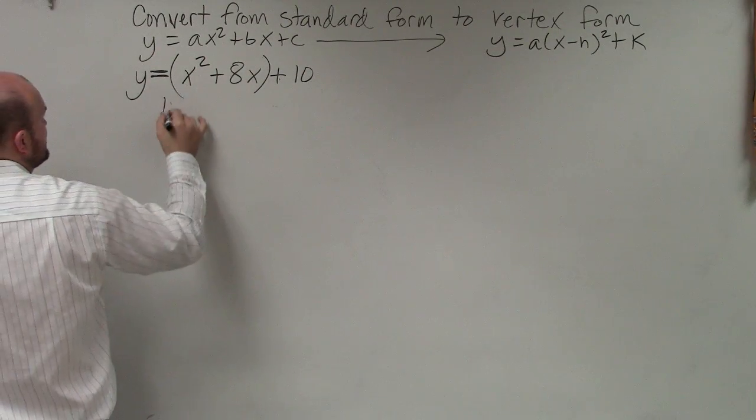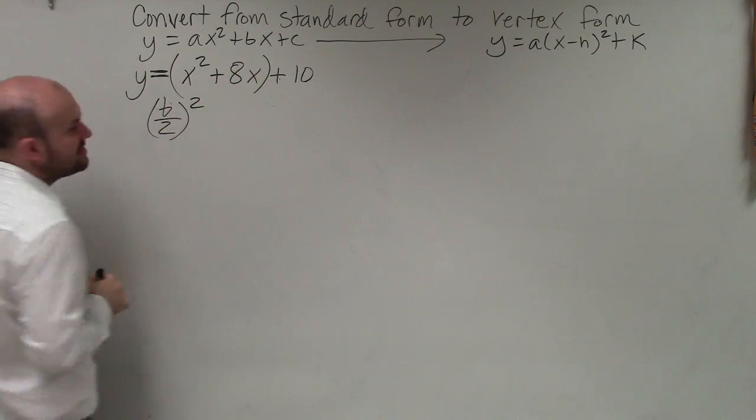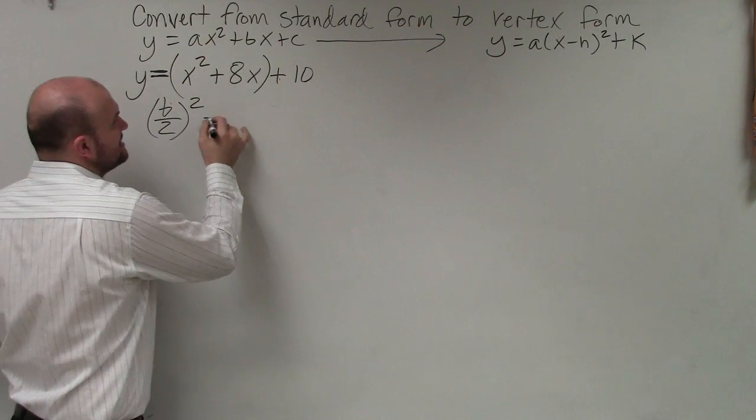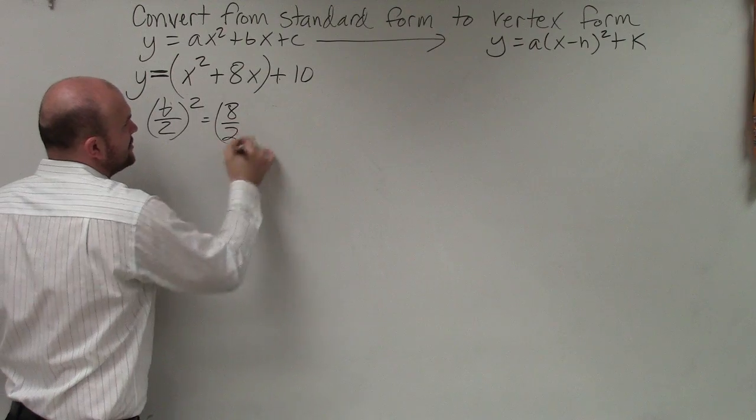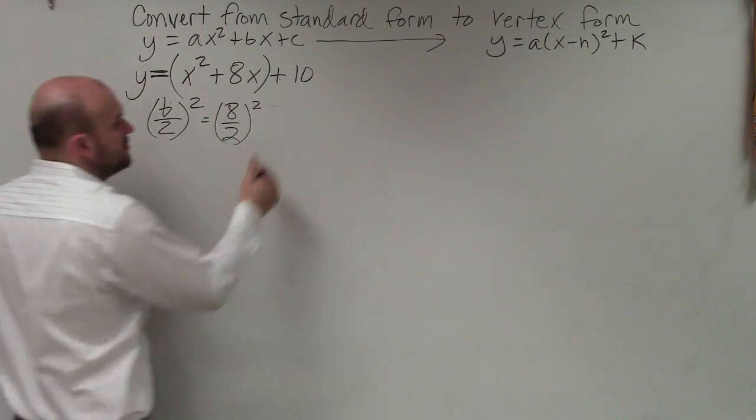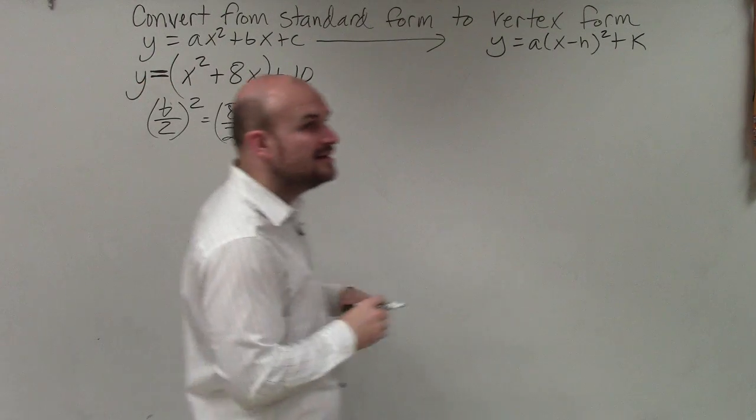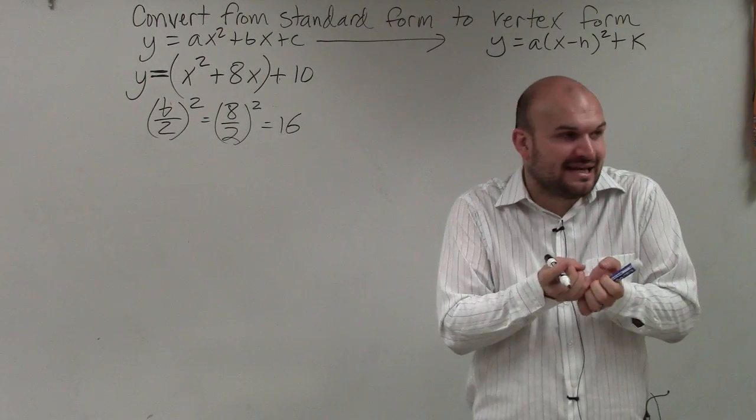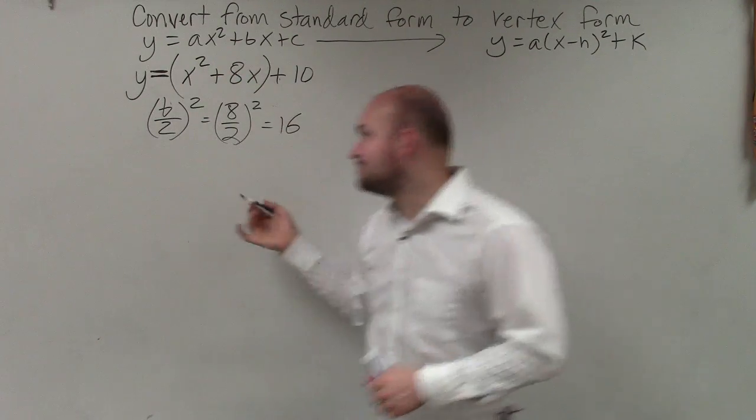Step number two is we're going to take b divided by 2 and square it. In this case, I'm going to have 8 divided by 2 squared, which is 8 divided by 2 is 4. 4 squared is 16. Now, I'm going to take that 16 and add it inside the parentheses.